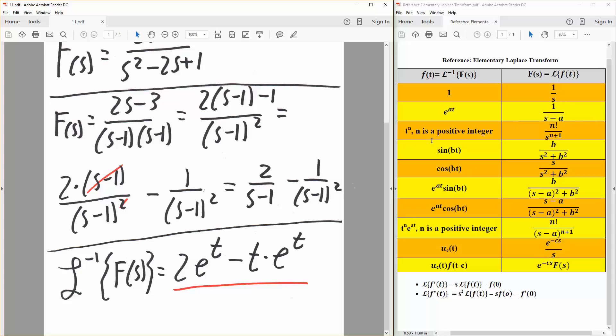We could say that this right here would be 2 times e raised to t, 1 times t. Next, we look at this, 1 divided by s minus 1 squared. That's going to be a match with this one right here.